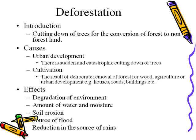Then, reduction in the sources of rain. Transpiration is the loss of water from the surface of a leaf. Deforestation decreases the transpiration, which lessens cloud formation and humidity, and this ultimately reduces the sources of rain.